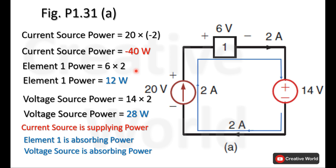The calculations of this circuit can be verified with the help of Tellegen's theorem. According to Tellegen's theorem, the summation of all supplied and absorbed powers within a network is always zero. If we sum these three powers — minus 40, 12, and 28 watts — their result is zero, which justifies the calculations.